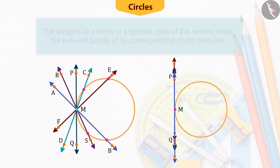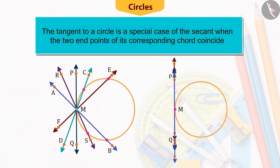With this, we get to know that the tangent to a circle is a special case of the secant when the two endpoints of its corresponding chord coincide.